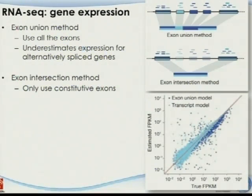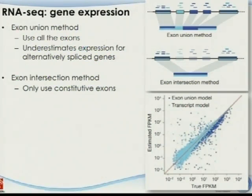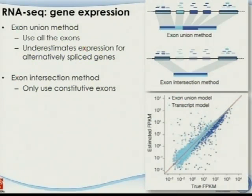For the exon union approach — using everything present in any isoform — there's a problem: it underestimates expression levels for alternatively spliced genes. If a particular exon is expressed only in the second isoform but not the first, and I calculate using everything together as my length, I'm over-counting the length and over-correcting my samples. In a real example, the true value versus the estimated value from the exon union method shows it clearly underestimates the expression level of the gene.